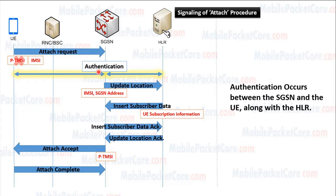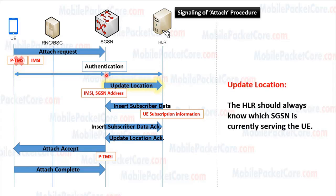Second, an authentication procedure occurs between the SGSN and the UE, along with the HLR. During this step, the SGSN will retrieve authentication-related parameters from the HLR. Those parameters will be used in the authentication between the SGSN and the UE. Then the SGSN sends an update location message to the HLR.